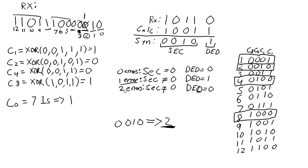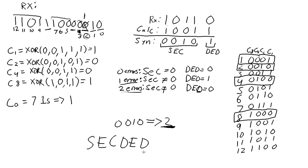Also remember that when we have two errors, the single error correction code can only give us the address of one bit, so we can't make any corrections. All we can do is request a retransmission and hope that no more errors occur. This is the process that a system goes through when it receives a SEC-DED code word to determine how many errors occurred and, if possible, where the error is located.